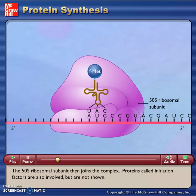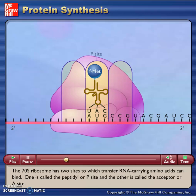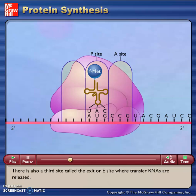Proteins called initiation factors are also involved but are not shown. The 70S ribosome has two sites to which transfer RNA-carrying amino acids can bind. One is called the peptidyl or P-site and the other is called the acceptor or A-site. There is also a third site called the exit or E-site where transfer RNAs are released.